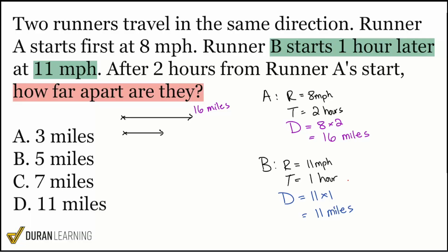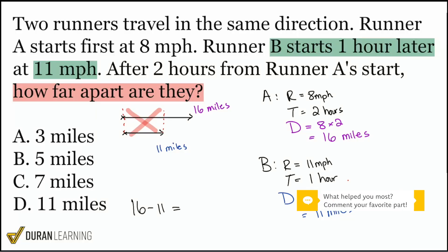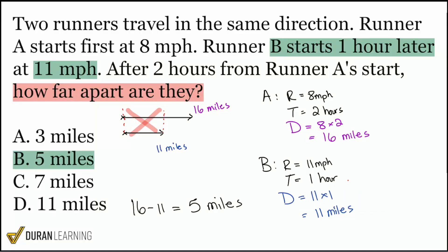Runner A went 16 miles; Runner B traveled 11 miles. Since they went in the same direction, we subtract. We cancel out the section they both covered, so 16 minus 11 gives us a distance separation of 5 miles. That will be answer choice B.